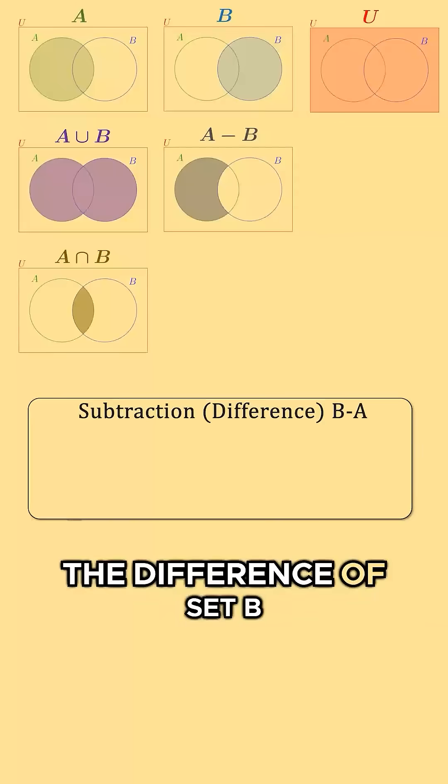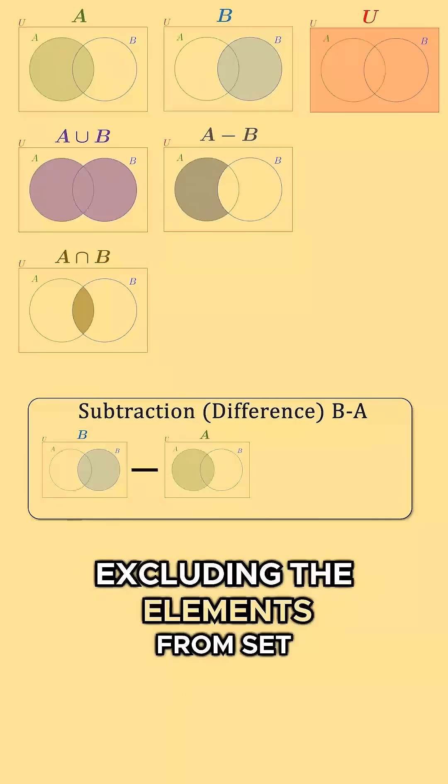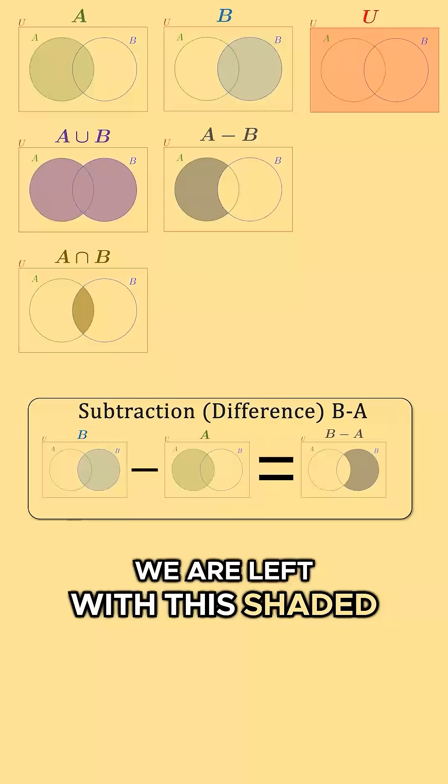The difference of set B and set A would be all the elements in set B excluding the elements from set A. We are left with this shaded area.